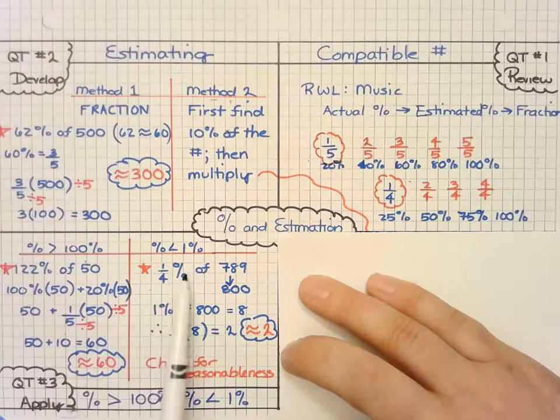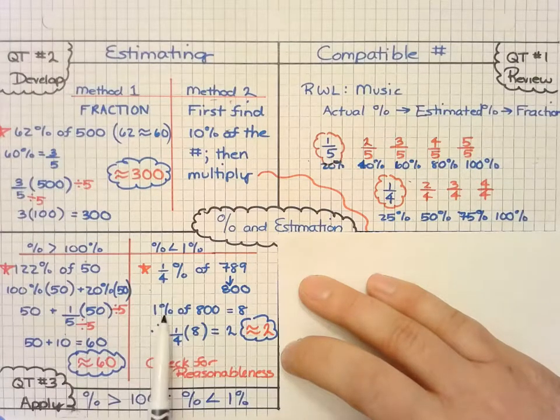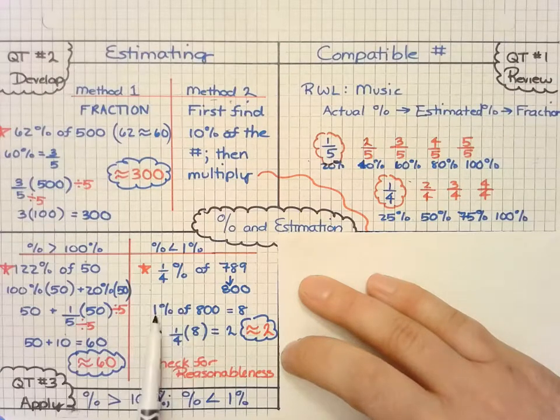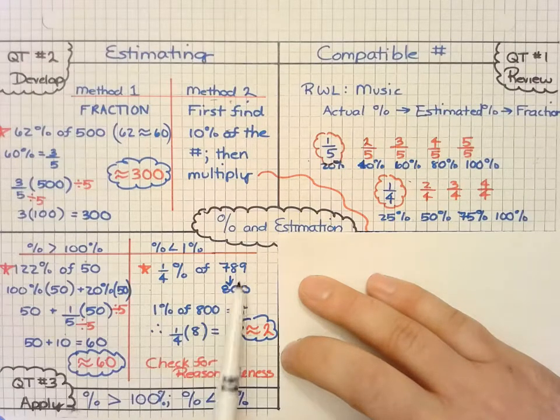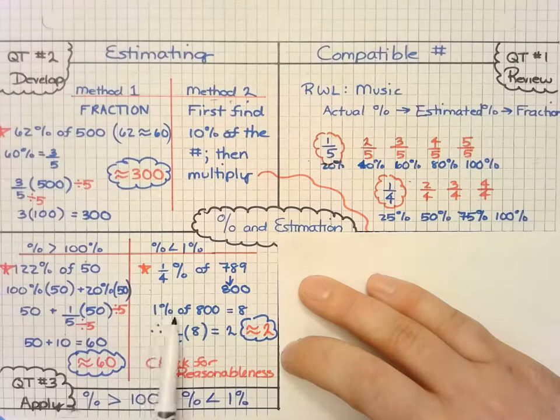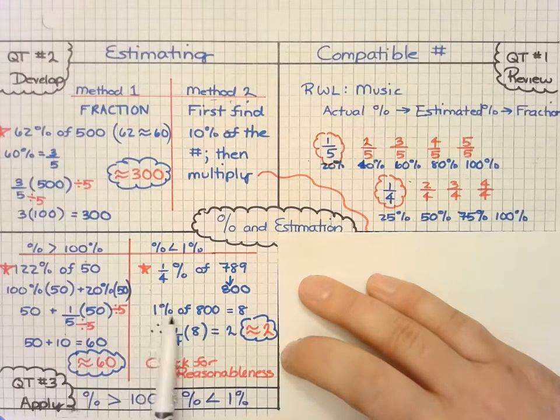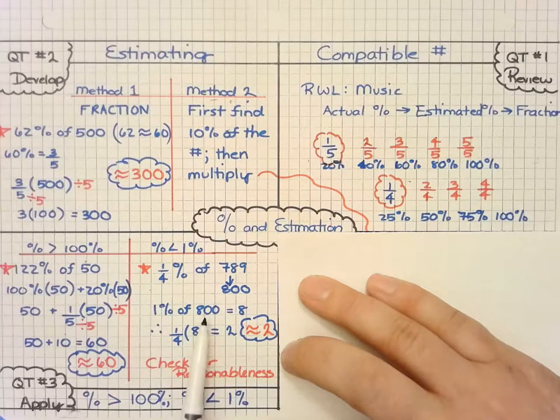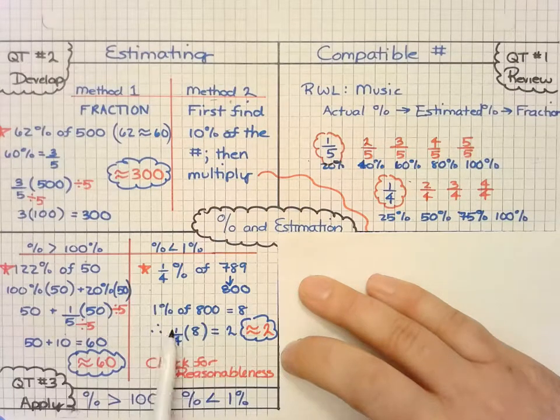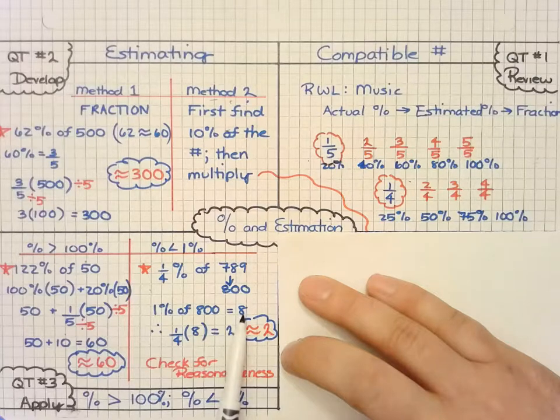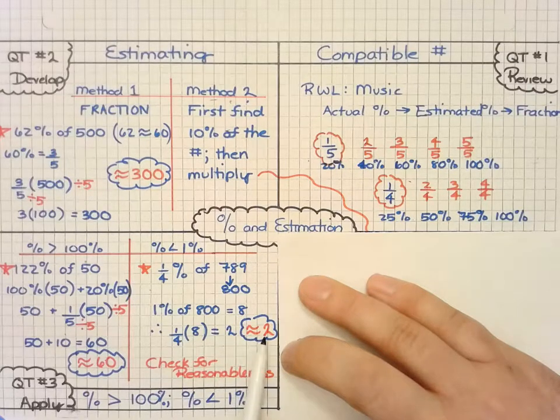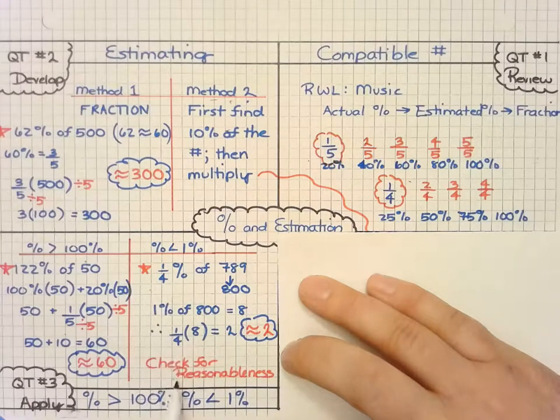Finally, if we have a quarter of a percent, that's less than 1%. So it might be easier to start with that 1%, I rounded this to 800, because I know 1% of 800 is 8. Remember, 10% of 800 is 80. Therefore, I can then take the one-quarter of that simplified answer of 8 and get approximately 2. And 2 is a really tiny number compared to 800. So that seems to be reasonable for our answer.